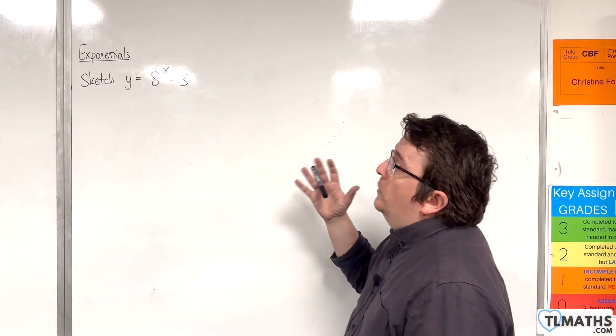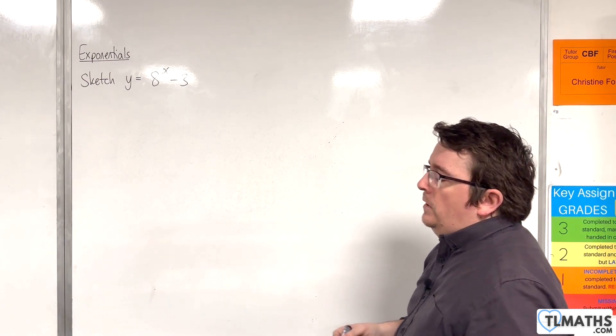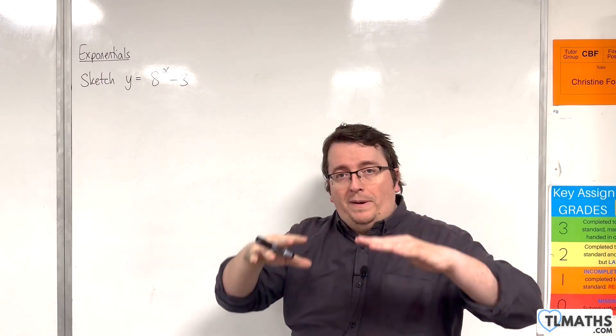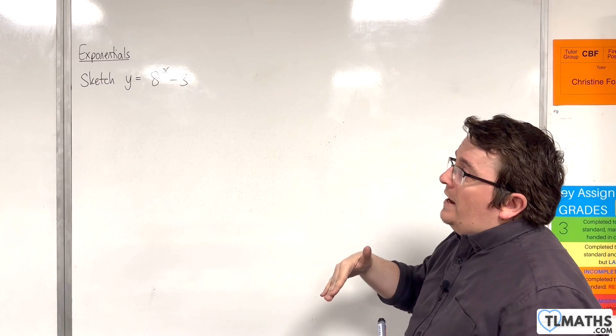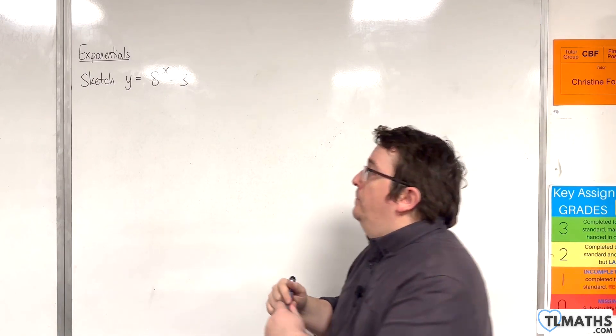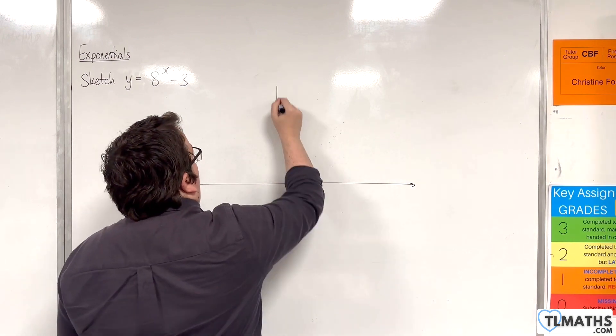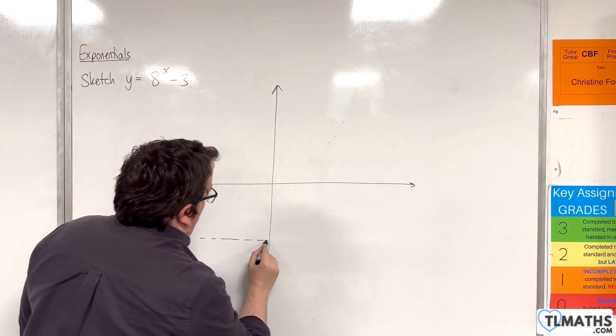In this video, I want to look at sketching y = 8^x - 3. That negative 3 just means that the curve is dropping down 3 units, so the horizontal asymptote will be following it. That means we're going to have a horizontal asymptote at y = -3. That's the first thing we should sketch.